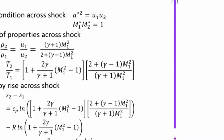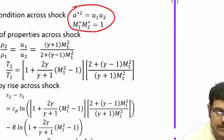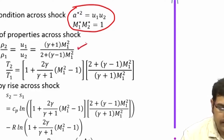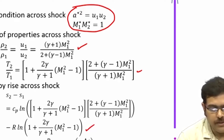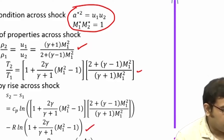Just to give a quick recap: the important relationship we get is Prandtl's relation for normal shocks, which is M1* · M2* = 1. The main principle used here is that it is an adiabatic flow, and in adiabatic flow the star conditions remain constant. Applying that along with the conservation equations gives relationships for density ratio, temperature ratio, pressure ratio, entropy ratio, and stagnation pressure ratio across the shock. Since shock waves generate entropy, the stagnation pressure decreases across the shock.